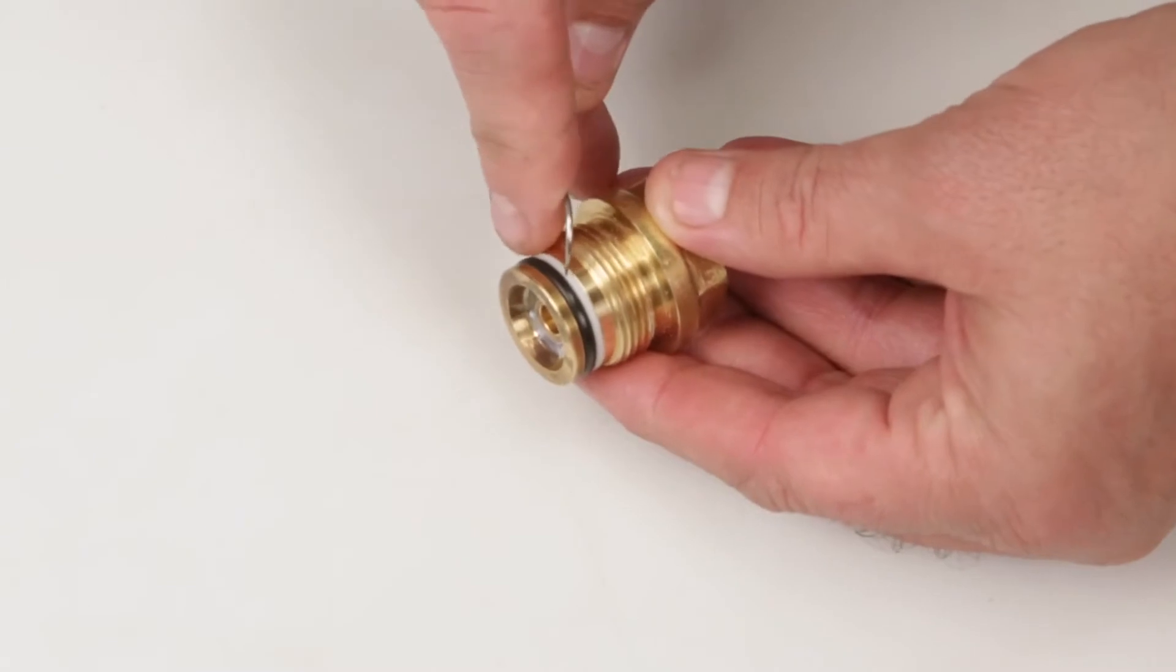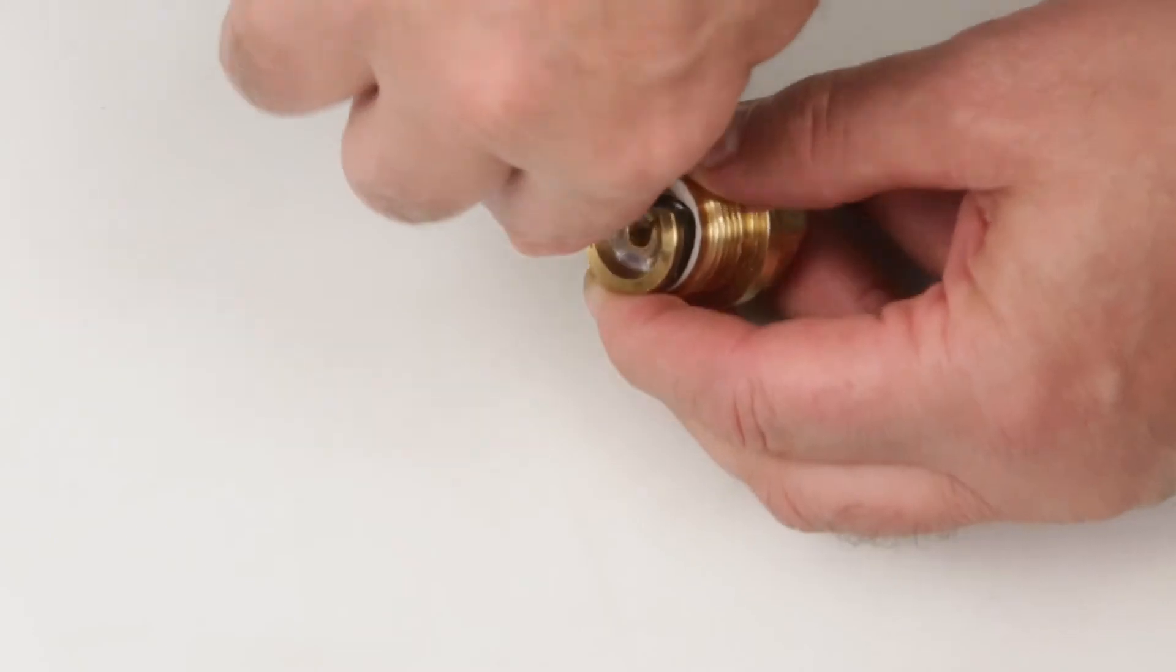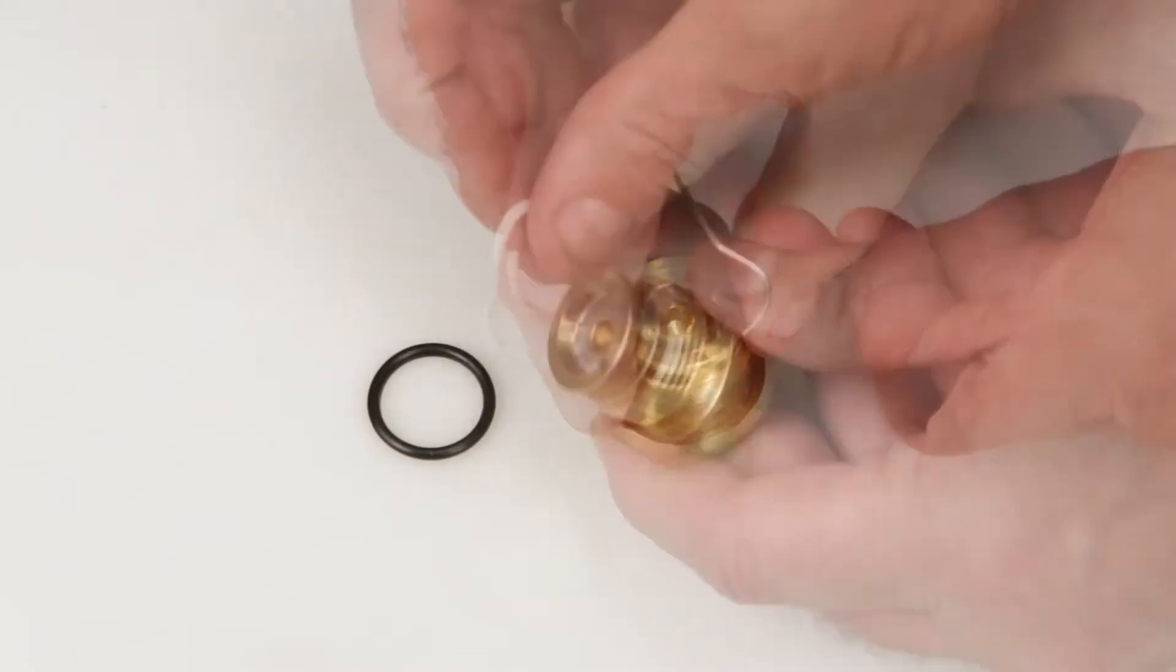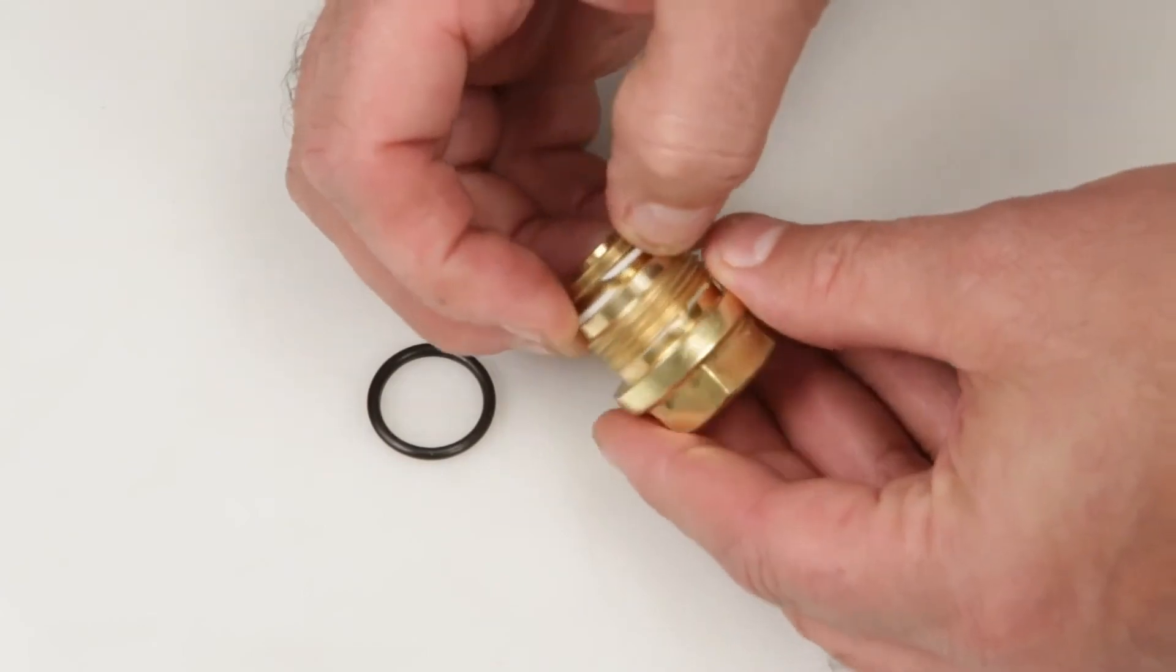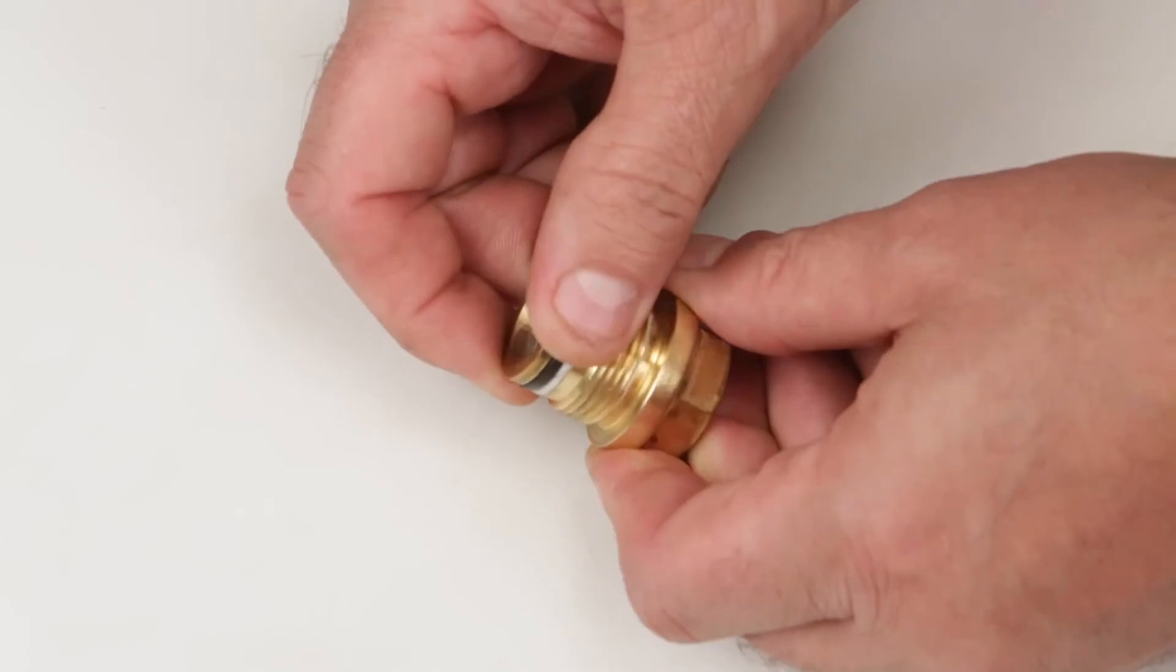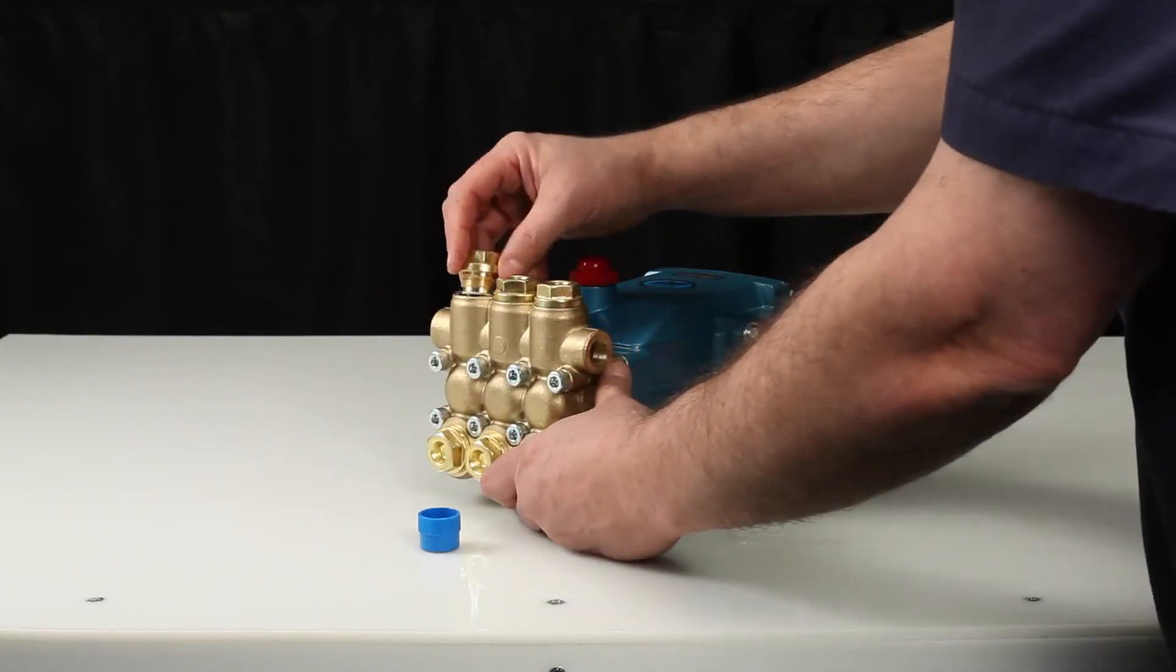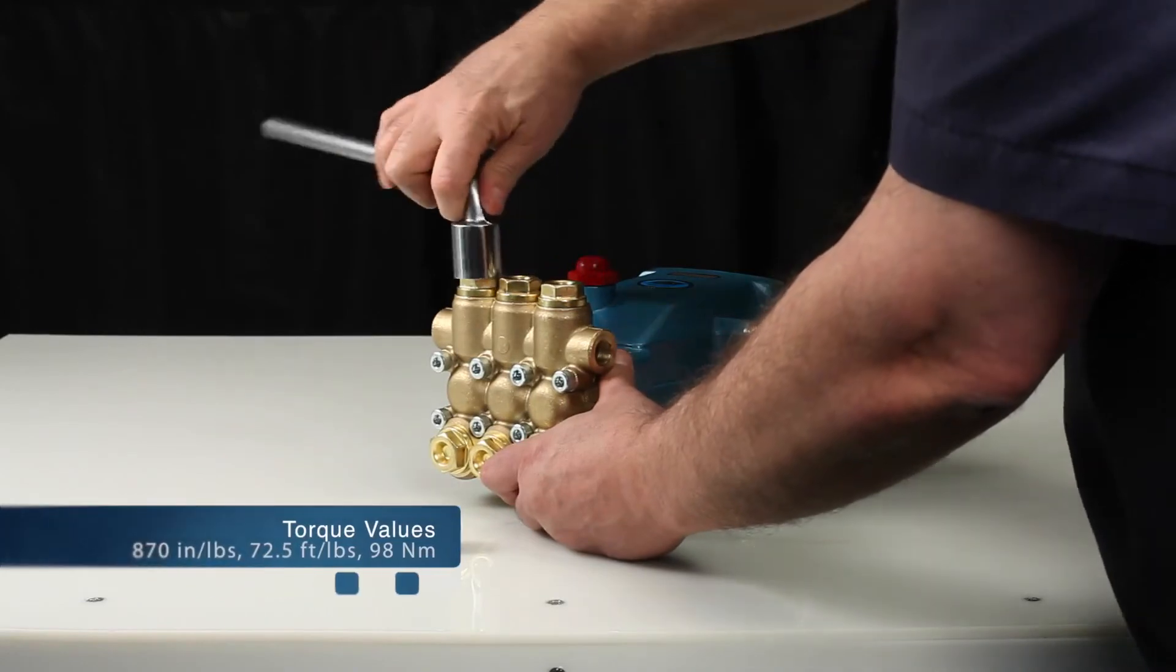Before reinstalling the valve plug, using a small screwdriver or pick, replace the O-ring and backup ring provided in the valve kit. Lubricate the O-ring and reinstall the valve plug. Torque to specification.